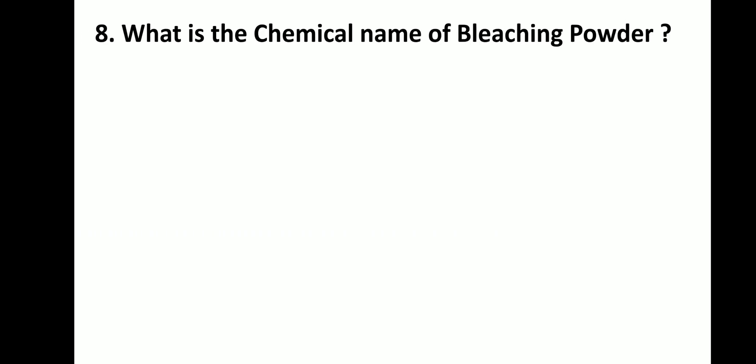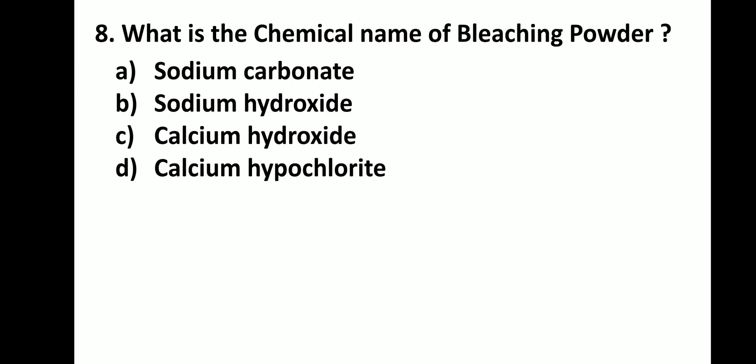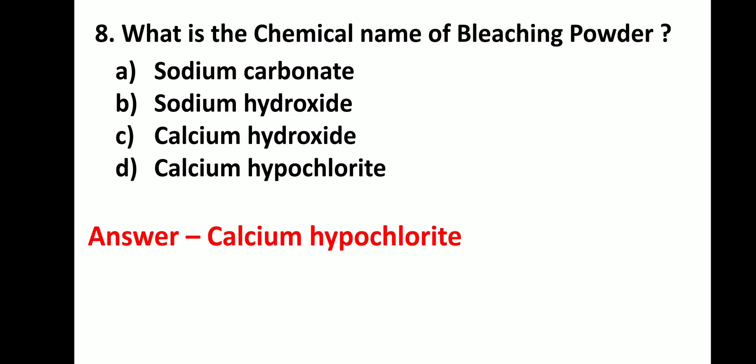What is the chemical name of bleaching powder? The chemical name of bleaching powder is calcium hypochlorite.